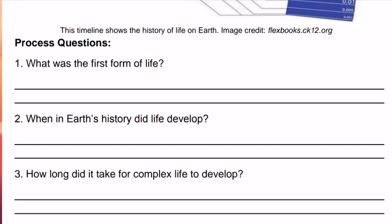Based on the diagram, the first form of life on Earth was developed 4 billion years ago. The last question: How long did it take for complex life to develop? The complex form of life was developed 2 billion years ago as shown on the diagram. From the first simple form of life — prokaryotes — it took 2 billion years for eukaryotes to develop. Simple as that.